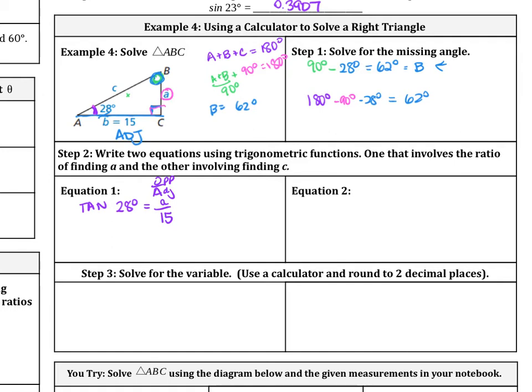So here is our first ratio involving A. Now we need to find one involving C here. So use this angle, this side we already are given, and this angle here. We have adjacent over hypotenuse, and what ratio is adjacent over hypotenuse? That is cosine. So cosine of 28 degrees equals the adjacent, which is 15, over hypotenuse, which is C.